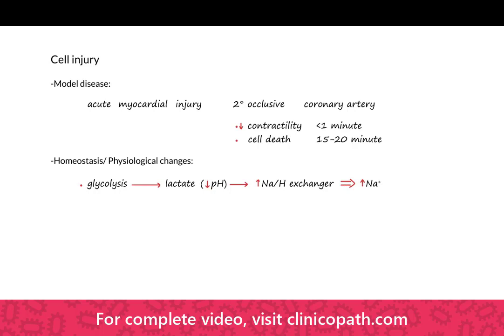The next thing the cells are going to do is release adenosine, which has two significant clinical effects: the first is pain of ischemia — so-called angina — and the second is vasodilation in an attempt to increase blood flow to the affected area. But ultimately, with progression to failure, we get a decrease in ATP production.